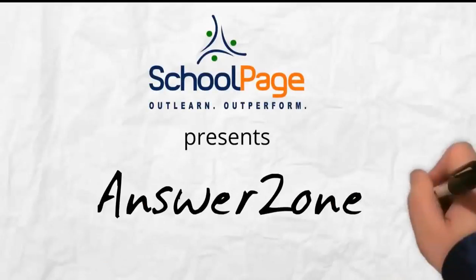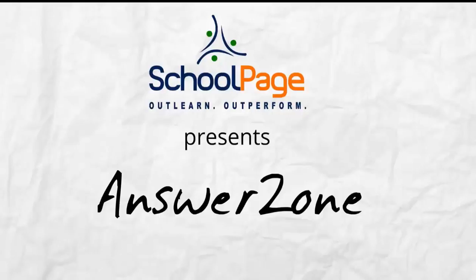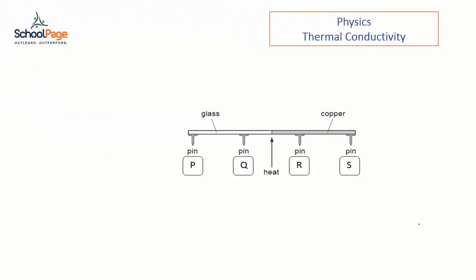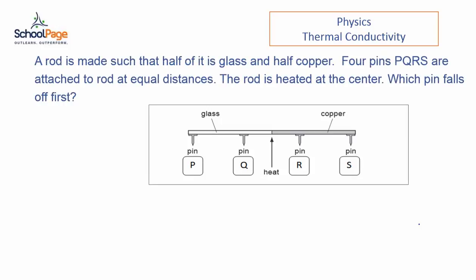Welcome to School Page Answer Zone. Here is your question from physics on thermal conductivity. A rod is made such that half of it is glass and half copper. Four pins P, Q, R, and S are attached to the rod at equal distances. The rod is heated at the center. Which pin falls first? Option A: P, Option B: Q, Option C: R, and Option D: S.